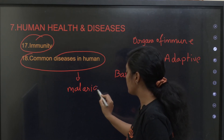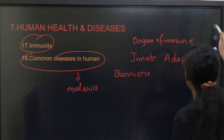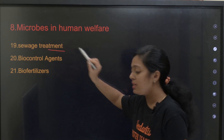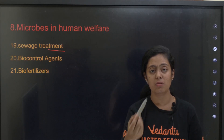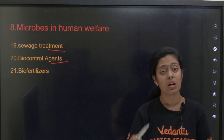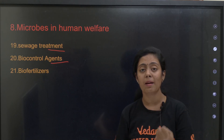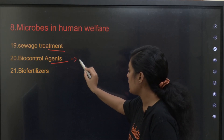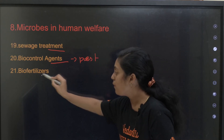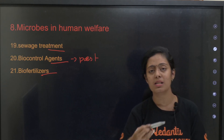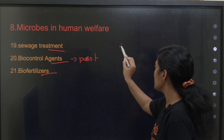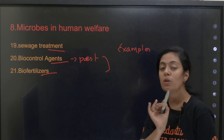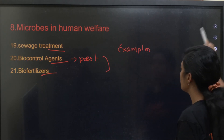Moving forward, we have microbes in human welfare — the easiest chapter. Sewage treatment is very important: primary treatment and secondary treatment. Then learn about biocontrol agents — how microorganisms and other organisms are used to control pests. Also, biofertilizers: Rhizobium, Mycorrhiza, Nostoc, and Anabaena — examples are very very important. These end-topic examples are extremely crucial.